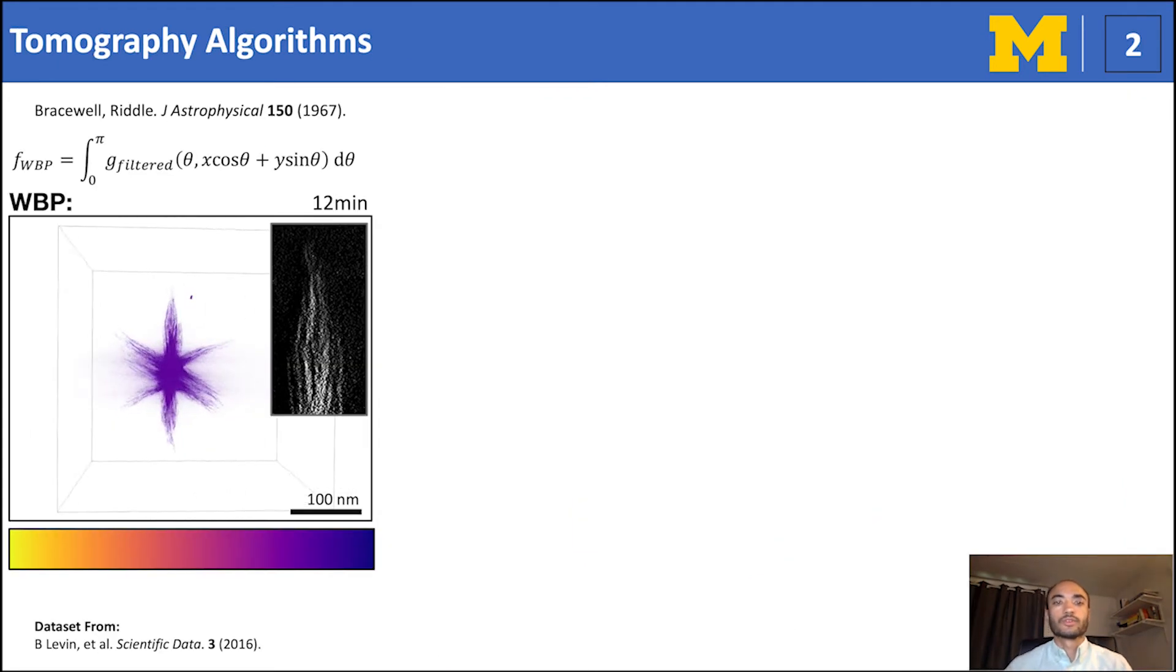Tomographic reconstruction algorithms are divided into two main categories, iterative and analytical-based methods. Analytical methods such as weighted back projection are computationally inexpensive, resulting in short construction times due to its non-iterative nature and smaller number of operations. These methods, however, require a lot of projections that contain high signal-to-noise. Here, I reconstructed a cobalt diphosphate nanoparticle with mixed Gaussian and Poisson noise. You can see that reconstruction suffers from a lot of the lack of information as the structure is hidden behind noise artifacts.